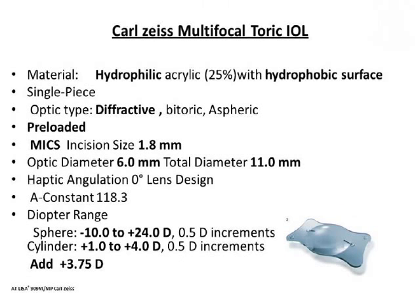The Carnia multifocal toric IOL is a hydrophilic intraocular lens with a hydrophobic surface. It is a diffractive IOL that is pre-loaded and can be implanted through a 1.8mm incision. The optic diameter is 6mm and total diameter is 11mm. It is available from −10 to +24 diopters in 0.5 diopter increments in the spherical range, and +1 to +4 diopters in the cylinder. This IOL has an add power of +3.75 diopters for near.